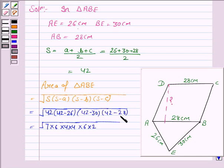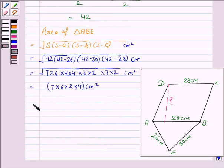42 minus 28 is 14 which can be written as 7 times 2. Taking the square root becomes 7 times 6 times 2 times 4 centimetre square, and it is equal to 336 centimetre square.